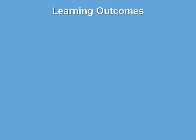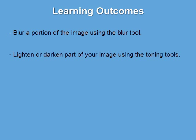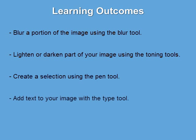After completing this unit you will be able to blur a portion of the image using the Blur Tool, lighten or darken part of your image using the Toning Tools, create a selection using the Pen Tool, and add text to your image with the Type Tool.